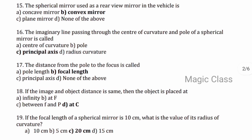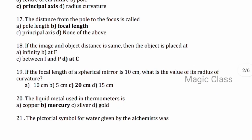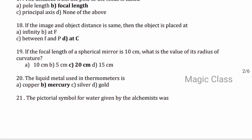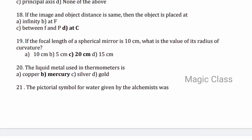Question 16 — the imaginary line passing through the centre of curvature and the pole of a spherical mirror is called the principal axis. Question 17 — the distance from the pole to the focus is called the focal length. Question 18 — if the image distance and object distance are the same, then the object is placed at C. Question 19 — if the focal length of a spherical mirror is 10 cm, what is the radius of curvature? Answer: option C, 20 cm.